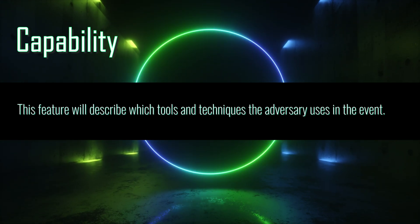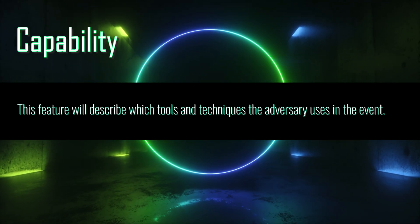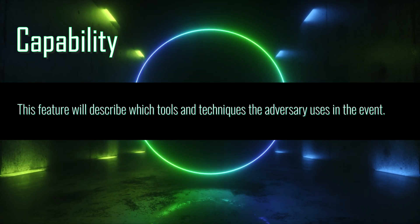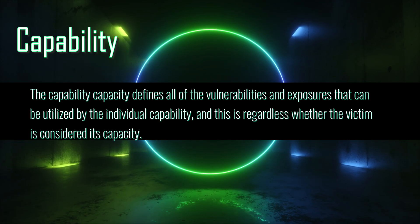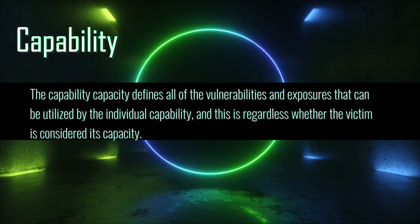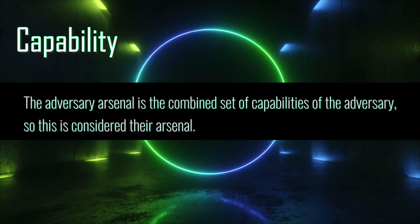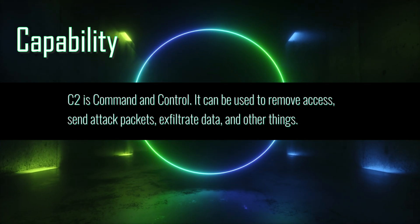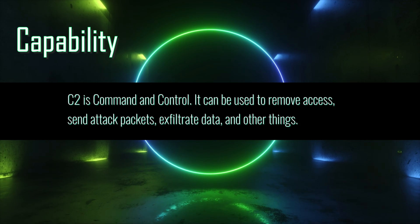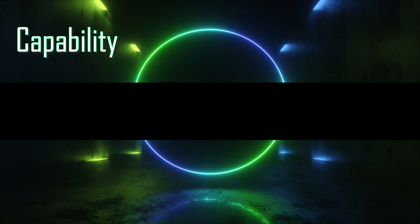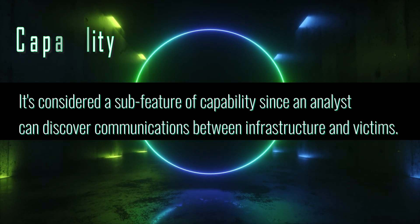Capability describes which tools and techniques the adversary uses in the event. The model is designed for capability to include all means that will affect the victim, from the most unsophisticated methods to the most sophisticated and automated techniques. The capability capacity defines all the vulnerabilities and exposures that can be utilized by the individual capability. The adversary arsenal is the combined set of capabilities of the adversary. C2, or command and control, is used by an adversary to maintain control over their attack. Malware needs to be manned by someone and can be used to remove access, send attack packets, exfiltrate data, and other things. For the Diamond Model, C2 is considered a sub-feature of capability, since an analyst can discover communications between infrastructure and victims.